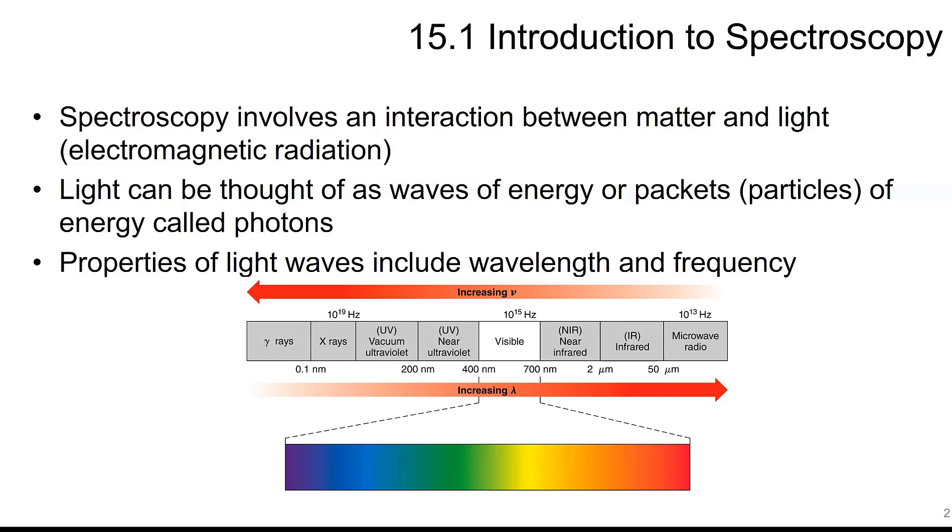Light can be thought of as waves of energy or different packets of particles of energies called photons. Light waves include wavelength and frequency. So you've seen this chart before. There are many wavelengths of light that cannot be observed with the eyes, so we can only see this part of it. We'll be focusing on this infrared here for infrared spectroscopy.